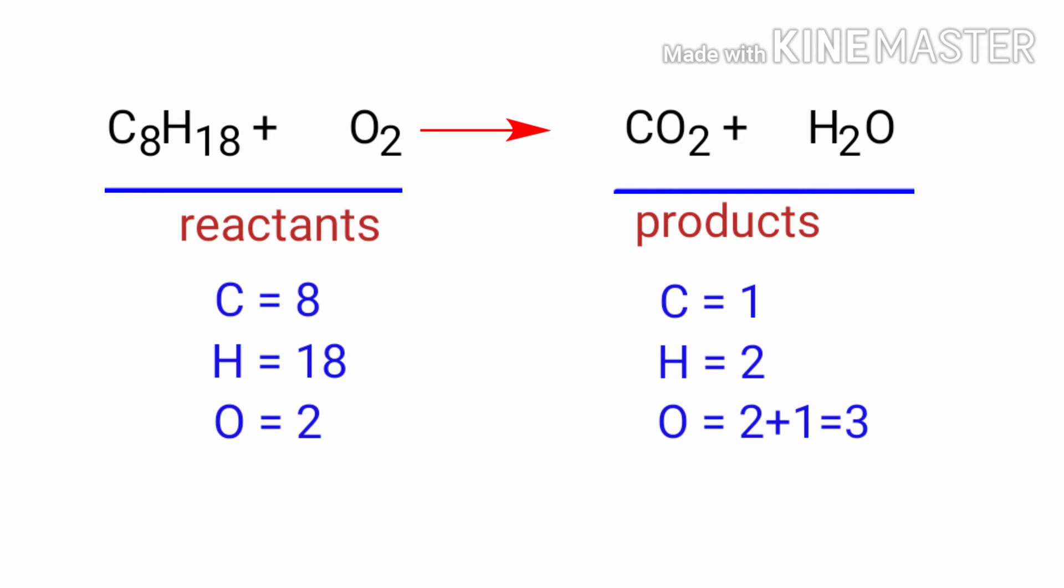In this equation, we need to balance the carbon atoms first. To do this, we need to put a coefficient of 8 in front of CO2. The carbon atoms are balanced.